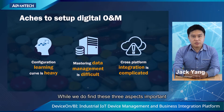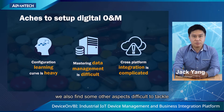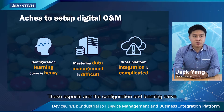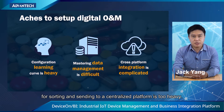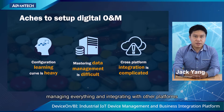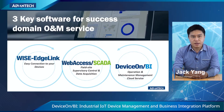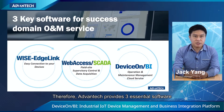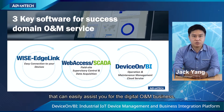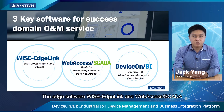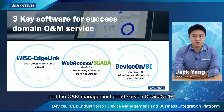While we do find these three aspects important, we also find some other aspects difficult to tackle before we can make use of the data. These aspects are the configuration and learning curve for sorting and sending data to a centralized platform, which is too heavy. And managing everything and integrating with other platforms is also a difficult and complicated task. Therefore, Advantech provides three essential software that can easily assist you for the digital O&M business: the edge software WISE-EdgeLink and WebAccess SCADA, and the O&M management cloud service DeviceOnBI.